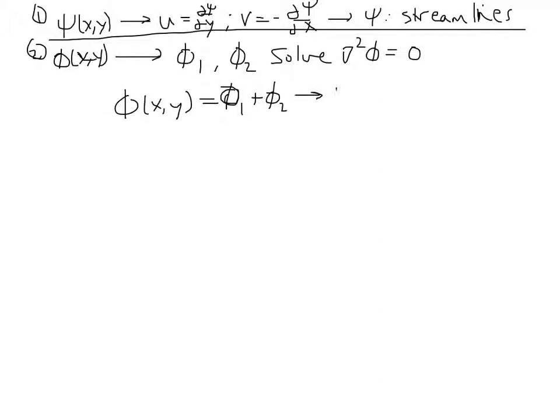Once you have phi of x and y, the radial velocity component is simply the r derivative of phi, and the circumferential component is 1 over r d phi d theta.